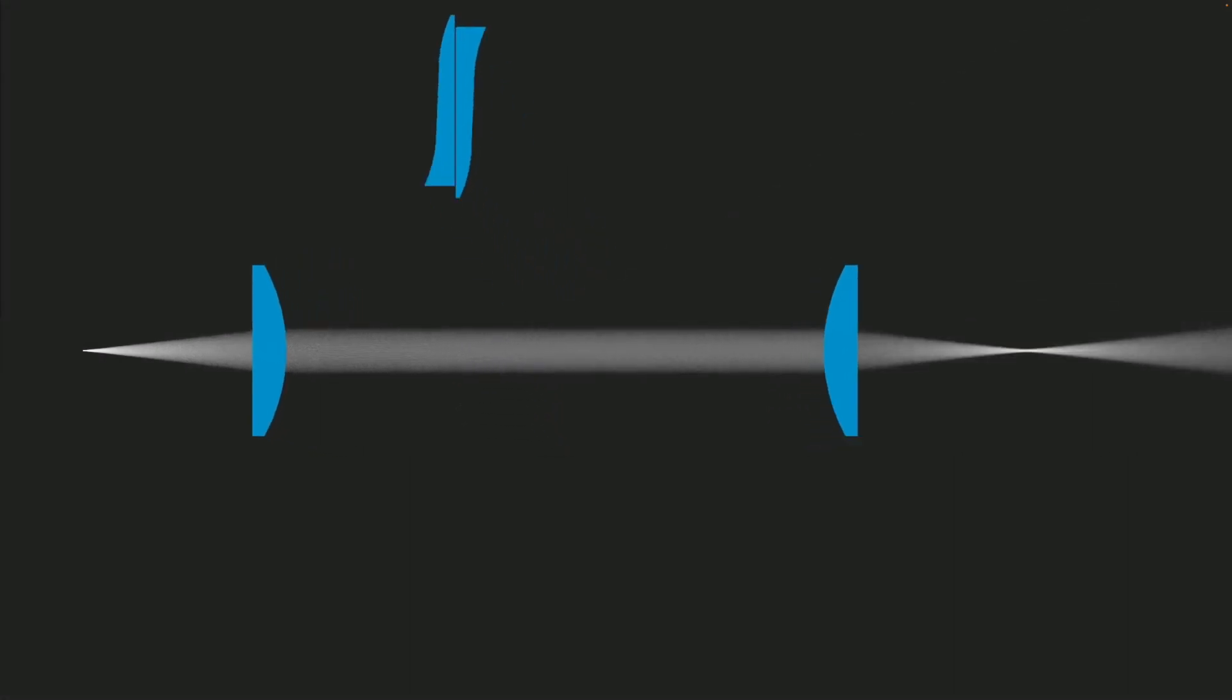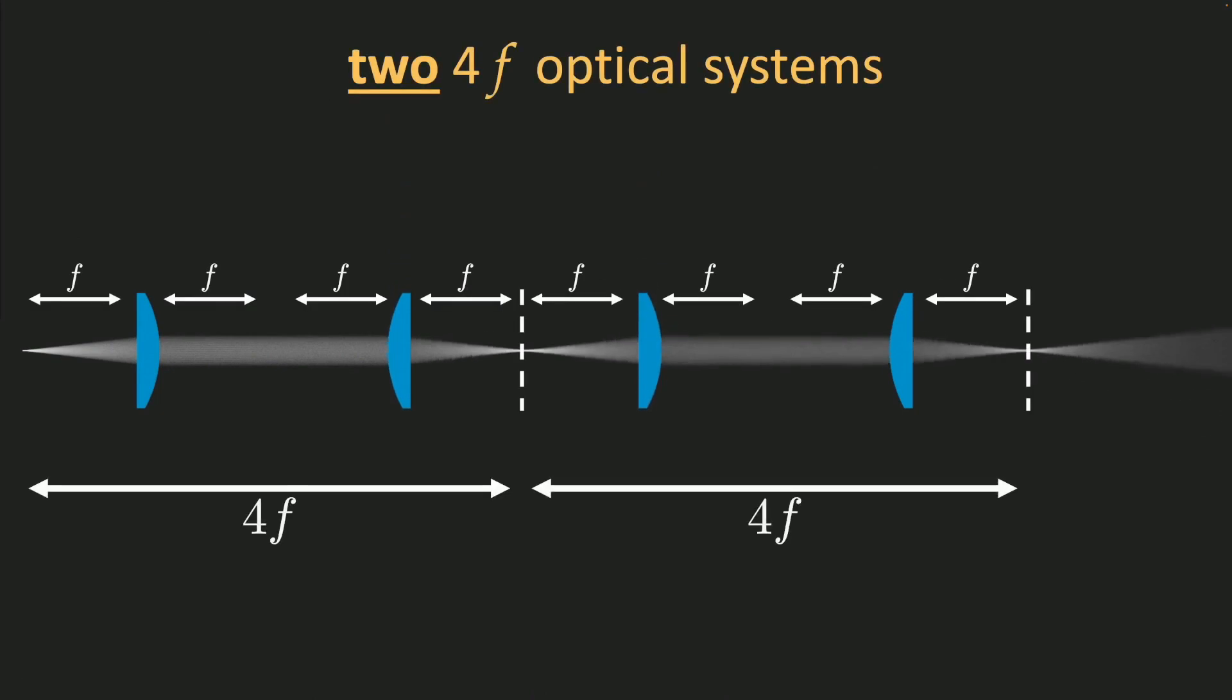Now to offer per-pixel focus control, we start by creating two 4F optical systems, producing two virtual image planes.